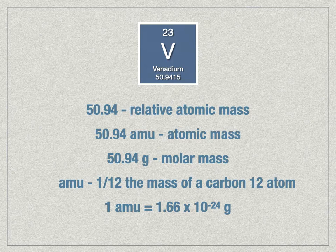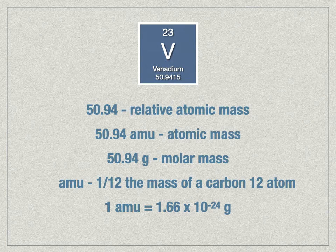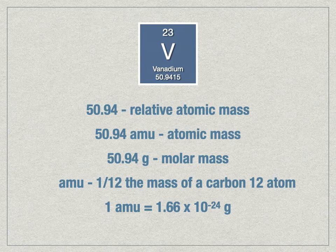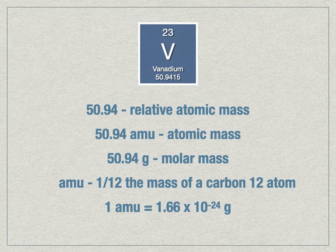The number on the periodic table that references mass is referred to as the relative atomic mass — essentially how much something weighs compared to a proton, which carries a mass of one. So vanadium is about 51 times bigger than a proton. We have a unit called the AMU which represents one atom of a thing. One atom of vanadium is 50.94 AMUs — that's the atomic mass. If we change that unit to grams, we have what's called the molar mass, because all of these things are based on relative masses. If we scale up how much of a thing we have and change the units to grams, we can measure an entire mole of something.